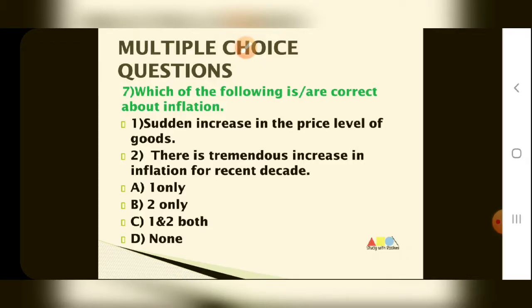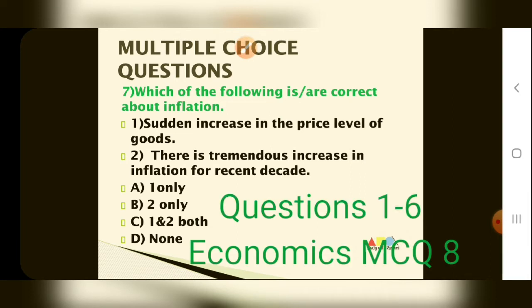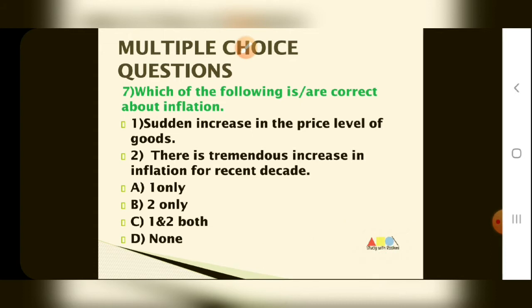Question number 7. What we have seen in the bank — we have seen the liquid adjustment facility and marginal standing facility. Now let's look at the inflation chapter.